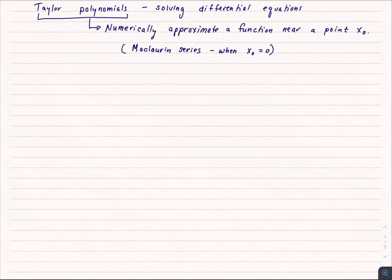What Taylor polynomials do is they numerically approximate a function near a specific point. We're going to call that point x0. You might have heard of Maclaurin series. A Maclaurin series is simply a Taylor series, but x0 is equal to 0.